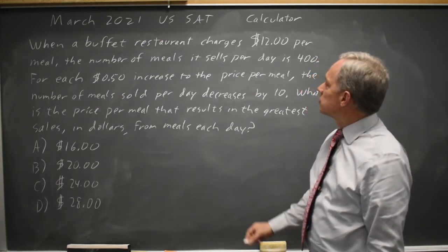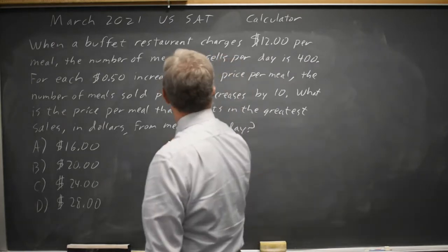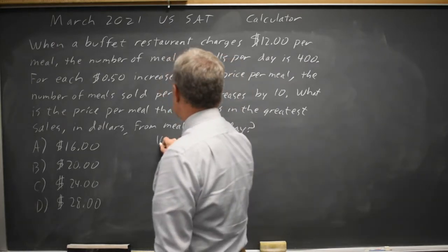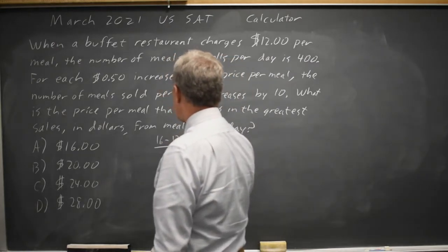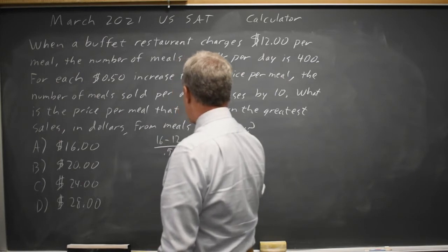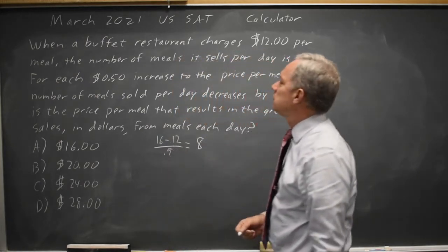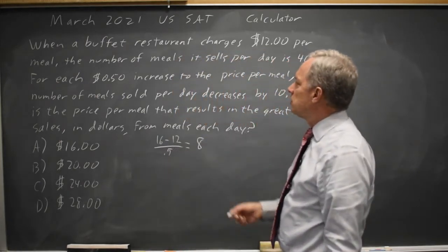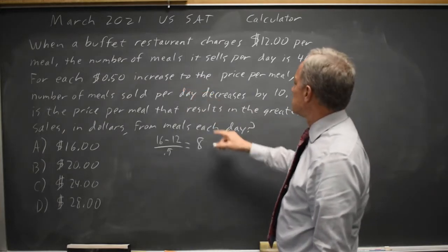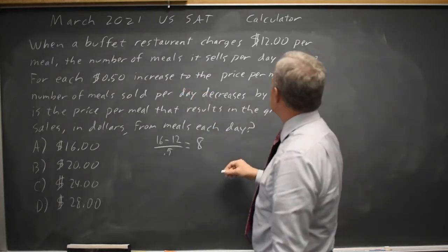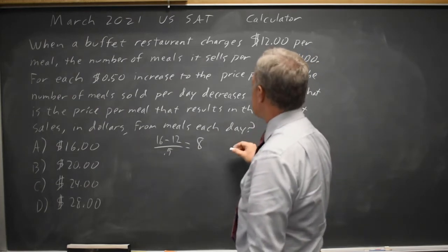So if they charge $16 per meal, that is 16 minus 12 over 0.5, which is 4 over 0.5, equals 8 additional 50-cent charges, which means we lose 8 times 10 — that is 80 sales.